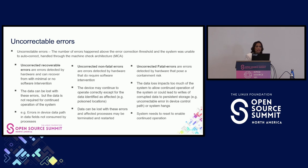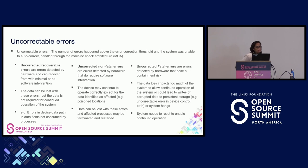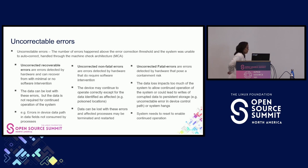Uncorrectable errors occur whenever the error correction threshold has been crossed and the system is not able to auto-correct those errors. These are handled through the machine check architecture, and are broadly categorized as uncorrectable recoverable errors, uncorrectable non-fatal errors, and fatal errors.